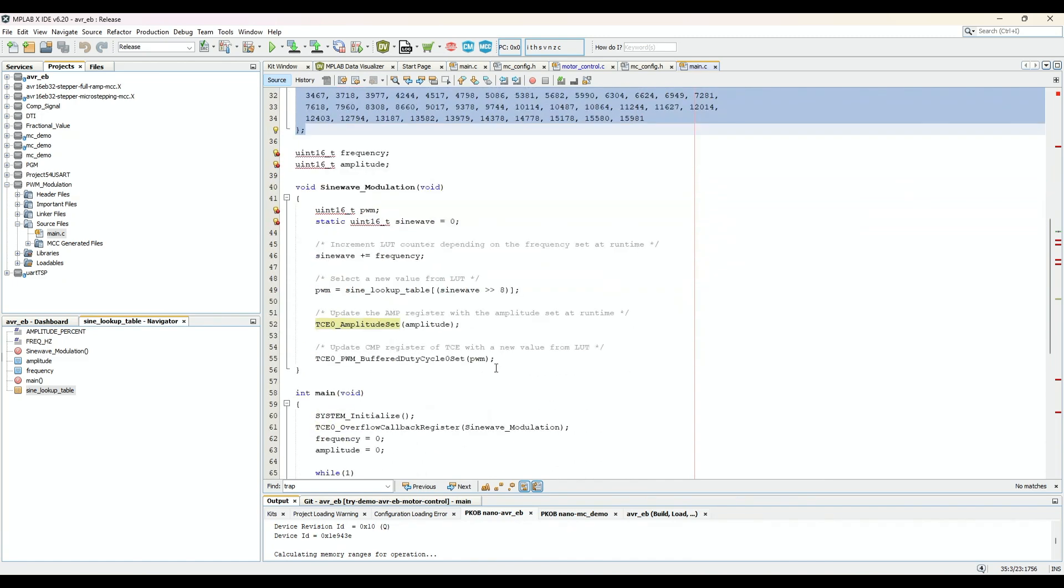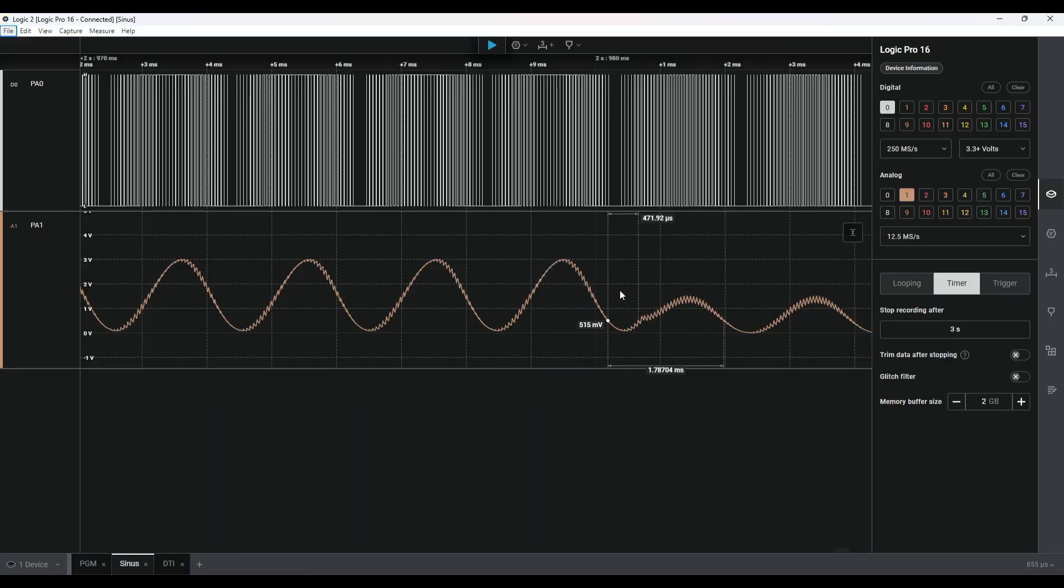Now if we want to change the amplitude of the signal, instead of trying to recalculate the lookup table, we can simply change the amplitude register and change the amplitude of the signal. Therefore, we can reduce software complexity thanks to the amplitude and offset register.